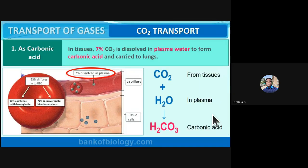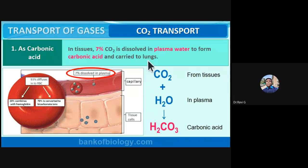First form of CO₂ transport — as carbonic acid: about 7% of carbon dioxide is dissolved in plasma water to form carbonic acid (H₂CO₃) and carried to the lungs in this form.